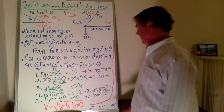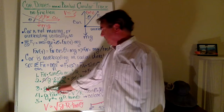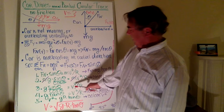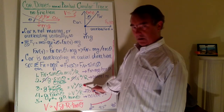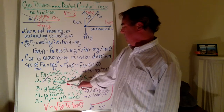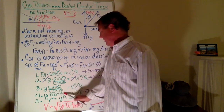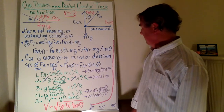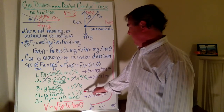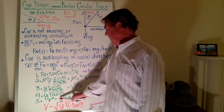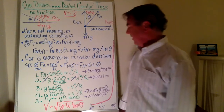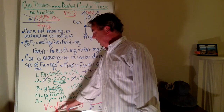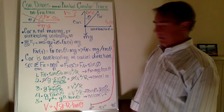Mass exists on both sides of the expression so it cancels out, leaving gravity times sine over cosine of the banking angle equal to velocity squared over radius. Sine over cosine is tangent, so gravity times tangent of theta equals velocity squared divided by radius. Dividing both sides by radius and taking the square root gives velocity equal to the square root of gravity times radius times the tangent of theta.